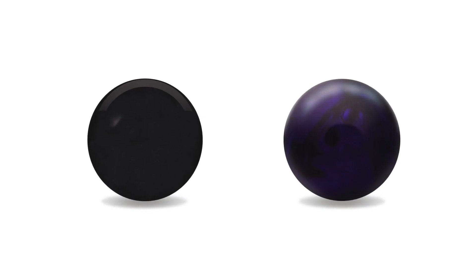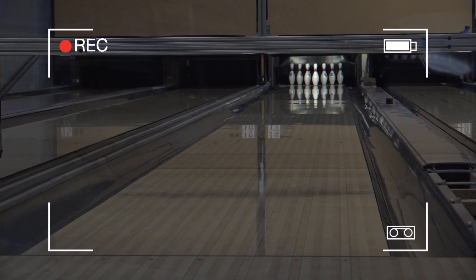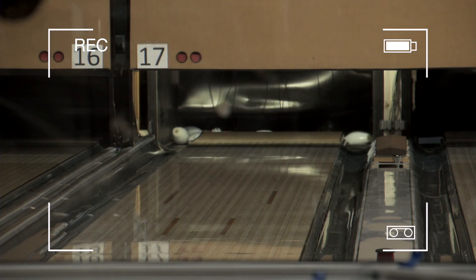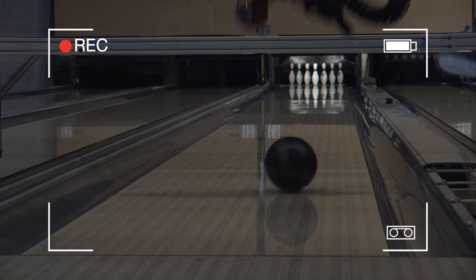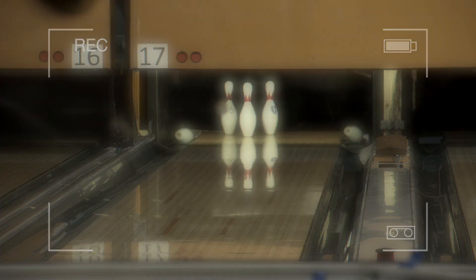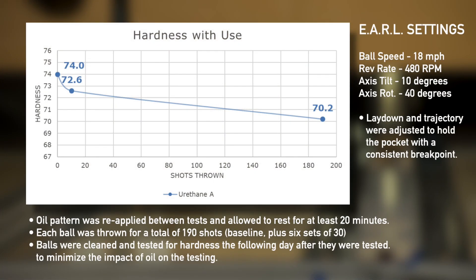For the first test, three samples of the two most popular urethane balls currently on the market were chosen and put through a series of tests to determine how use impacts the hardness of the balls, as well as how the resulting change in hardness affects bowling ball performance. The same testing process was used for both bowling balls.